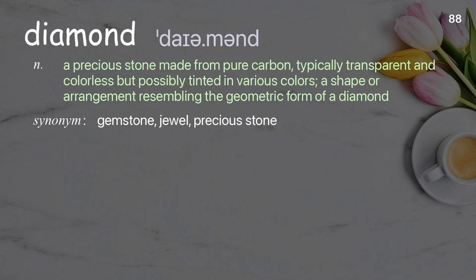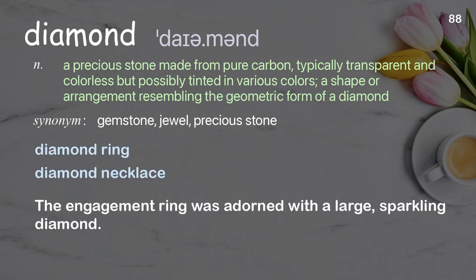Diamond: a precious stone made from pure carbon, typically transparent and colorless but possibly tinted in various colors; also a shape or arrangement resembling the geometric form of a diamond. Examples: diamond ring, diamond necklace. The engagement ring was adorned with a large sparkling diamond.